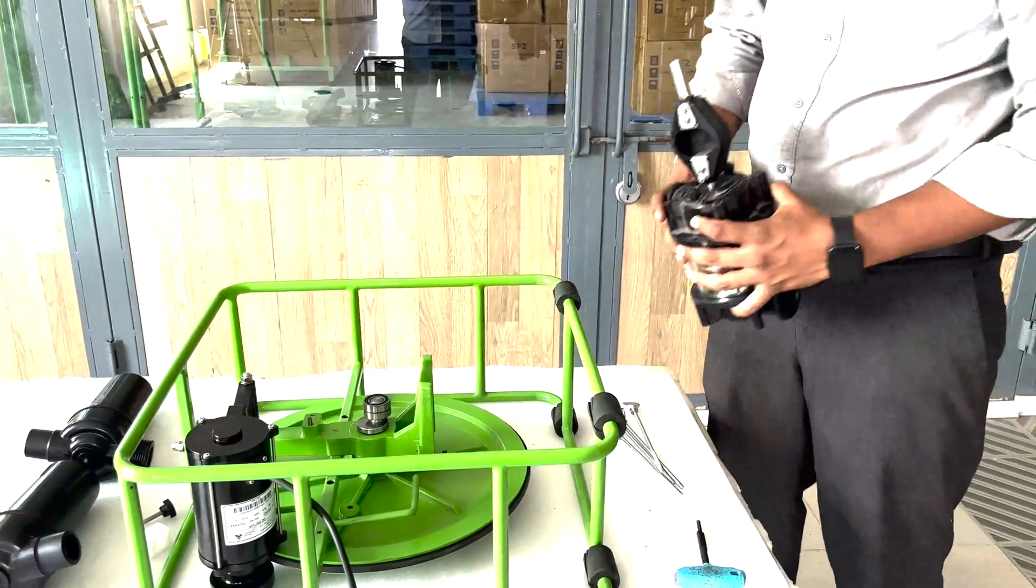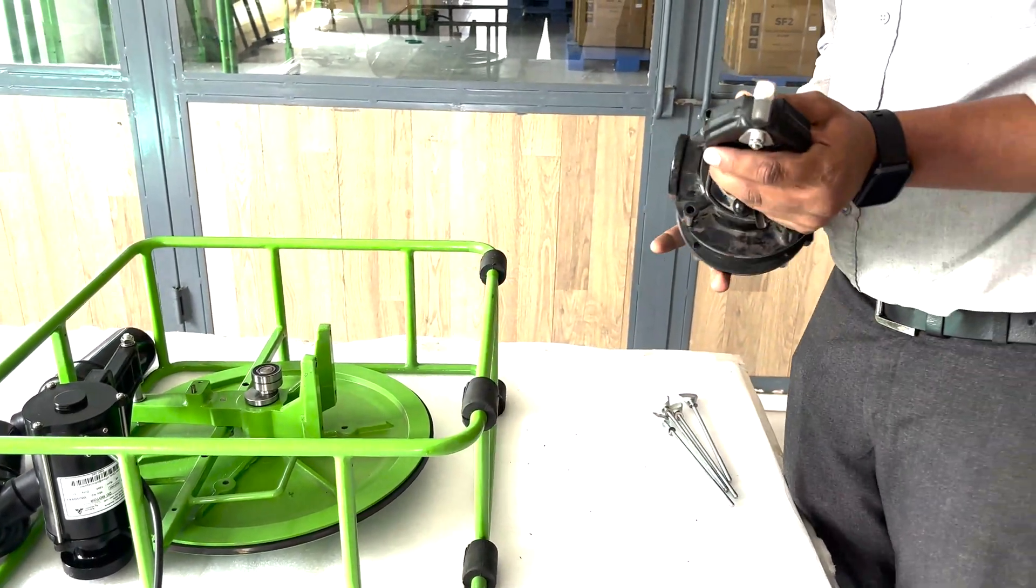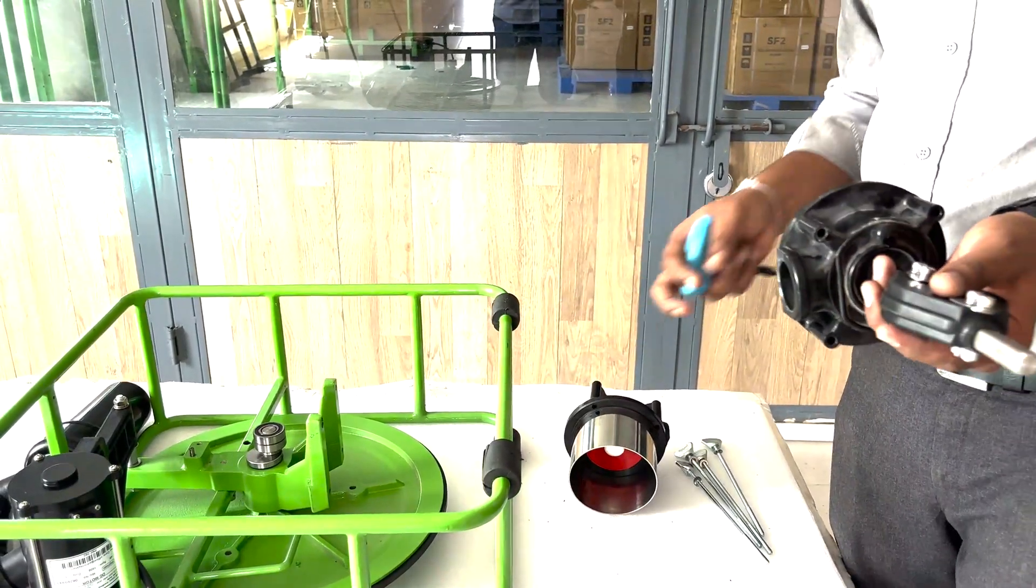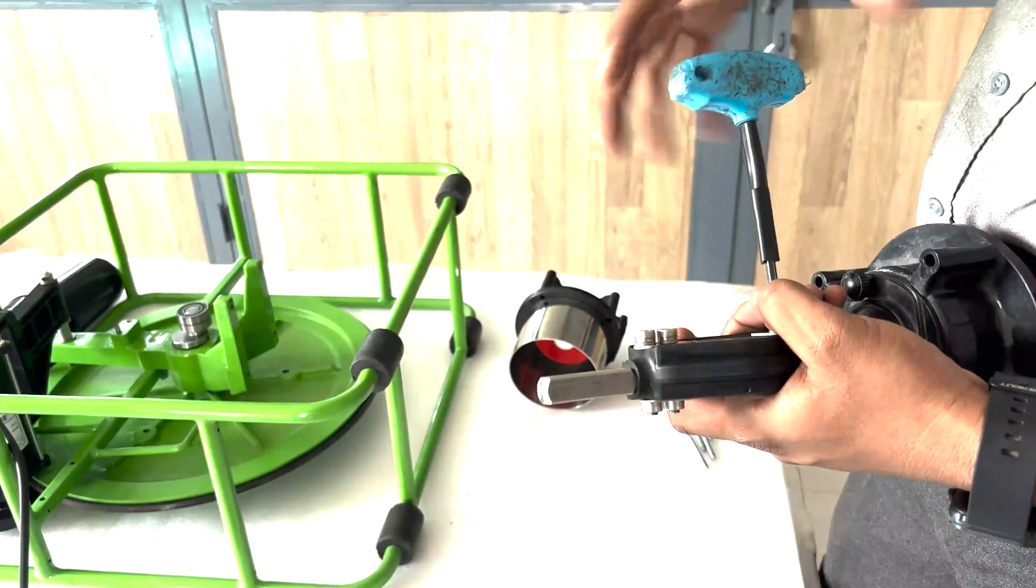We will now remove the yoke from the SF2 piston. To do this, take the allen key from the tools and spares kit. Remove the bottom cylinder and cylinder for easier holding of the piston and yoke.